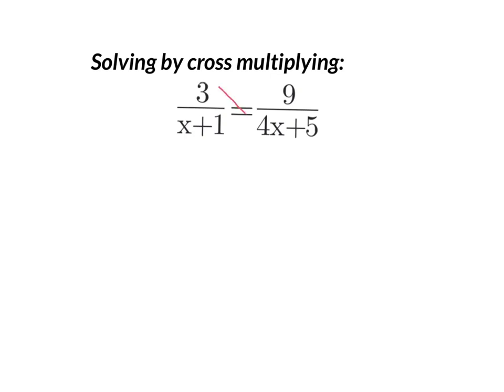So I'm going to cross-multiply that way. 3 times 4x is 12x, 3 times 5 is 15. Also going to cross-multiply that way: 9x plus 9. And once you do that, you have no more fractions, so it's just a regular, simple equation.